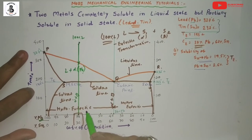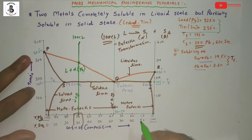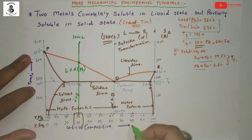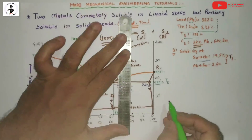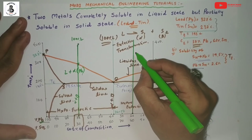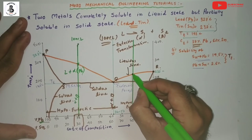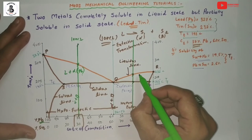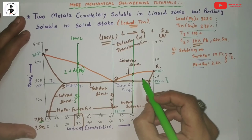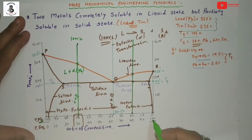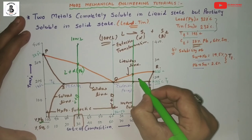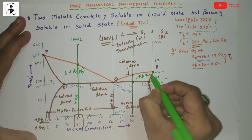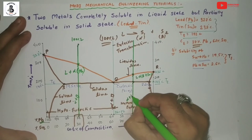For the hypereutectic region, take a point at around 20% Pb and 80% Sn and draw a vertical line. It intersects the liquidus and solidus lines similarly — once it touches the liquidus line, solidification starts. But here it is the majority of Sn on this side, so it forms liquid plus beta phase from Sn, and after that alpha plus beta.